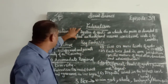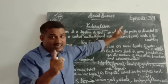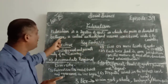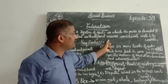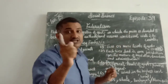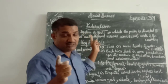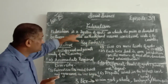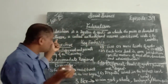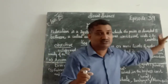First of all, try to understand about federalism. Federalism is a system of government in which the power is divided. Underline 'divided.' It means the power is shared between the central authority and various constituent units of the country. What is constituent units of the country? What is federalism?